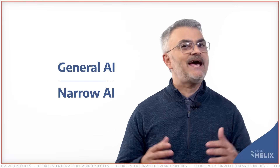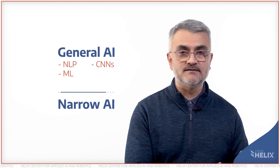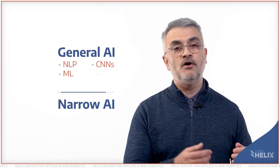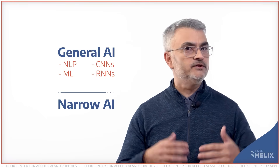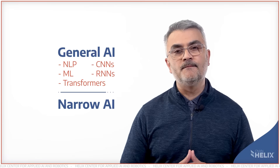Narrow AI, or weak AI, is sort of the lowest level, and general AI is sort of the catch-all term for NLP, for machine learning, for deep neural networks like CNNs — convolutional neural networks — or RNNs, recurrent neural networks, or even transformer networks of the ChatGPT fame.